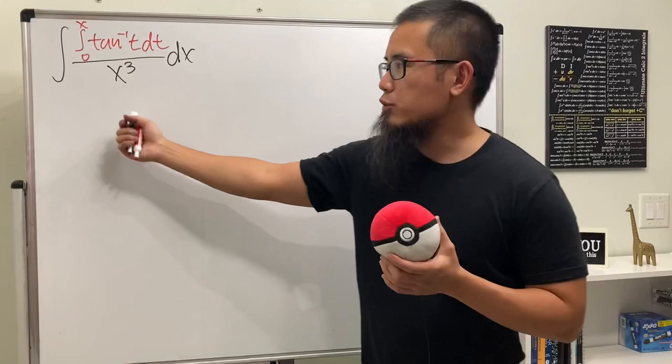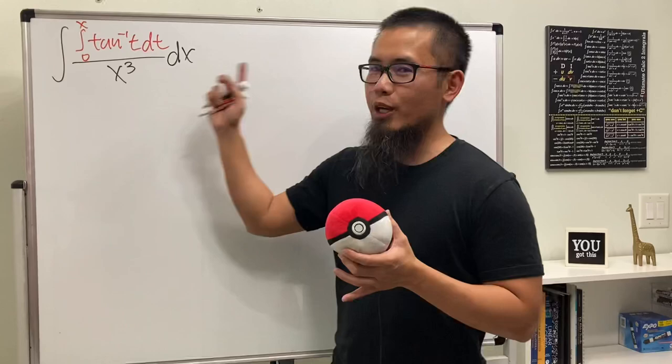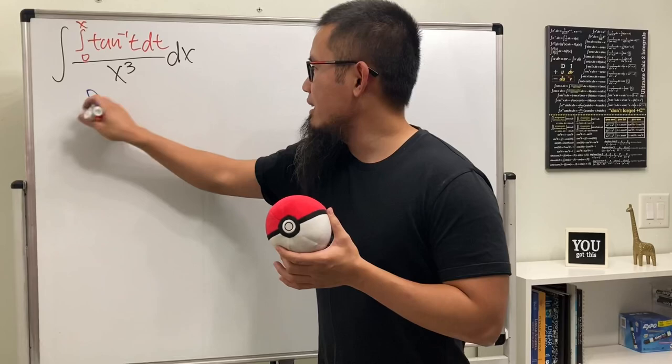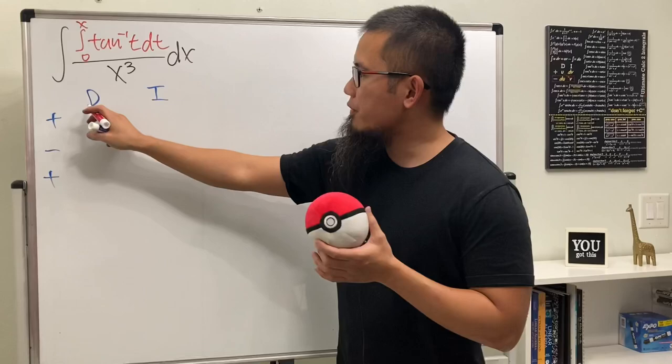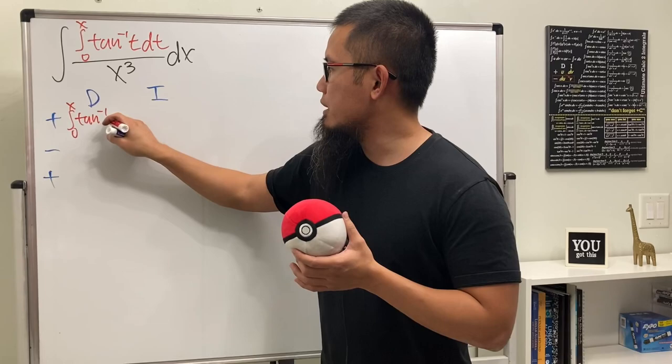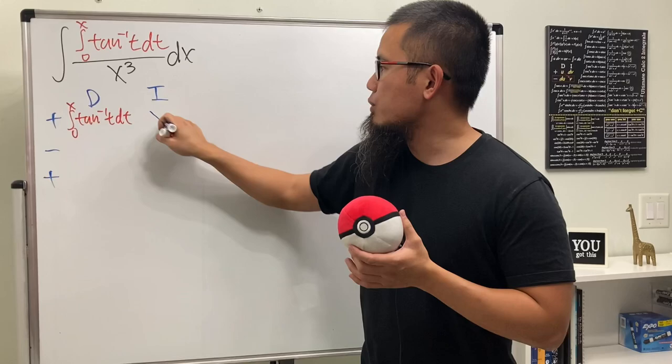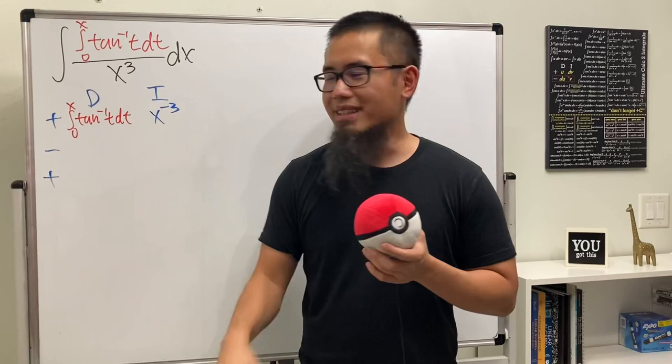Of course we could try to figure out the numerator integral and then divide by x to the third power, but let's just go ahead and do integration by parts — I think it's cooler that way. So here we go with the DI method. We need three rows. We will be differentiating the integral function going from zero to x of inverse tangent of t dt, and we will integrate x to the third power on the bottom, which is just x to the negative three.